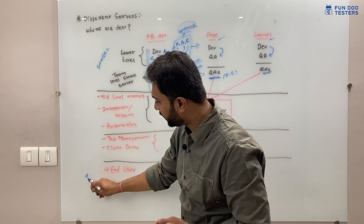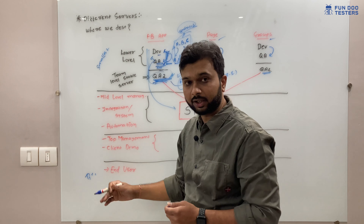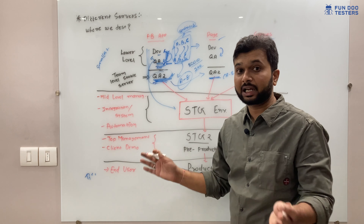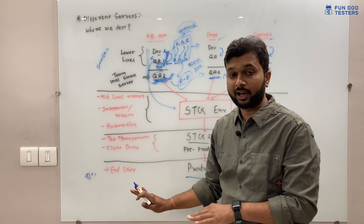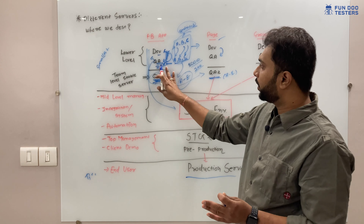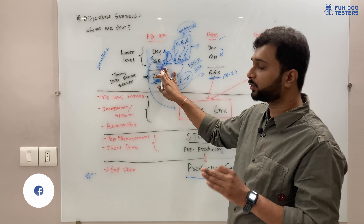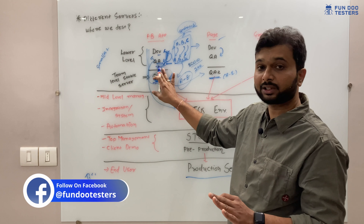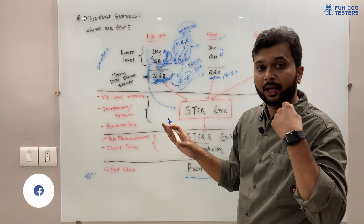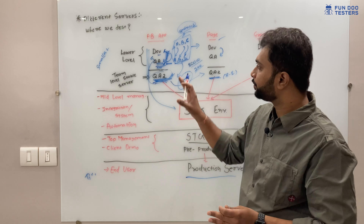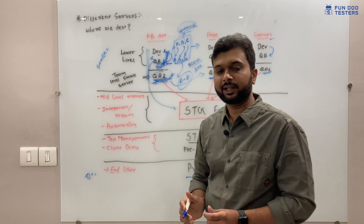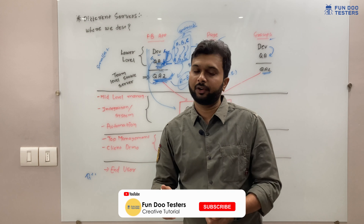More test cases are executed in lower environments, then fewer and fewer as you go up. In terms of server size, the development server is the smallest and the production server is the biggest. The production server must have higher RAM capacity and should have no downtime. The development server can go down anytime since only a small team - say five testers - is working on it and they know how to redeploy the build.